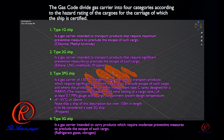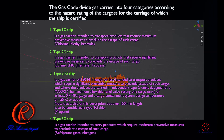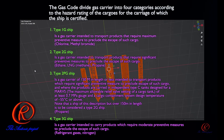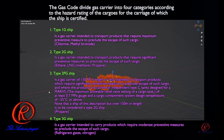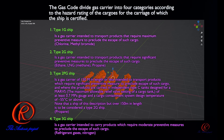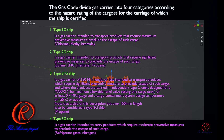Type 2G ships are gas carriers intended to transport products that require significant preventive measures to preclude the escape of such cargo. Type 2PG ships are gas carriers of 150 meters in length or less, intended to transport products which require significant preventive measures to preclude the escape of such cargo, and when the products are carried in independent Type C tanks designed for a MARVS — maximum allowable relief valve setting — of at least 0.7 MPa and a cargo containment system designed temperature of minus 55 degrees Celsius or above. Note that a ship of this description but over 150 meters in length is to be considered a Type 2G ship.